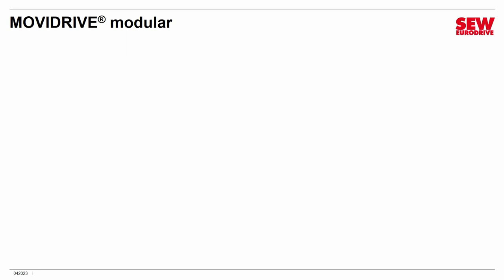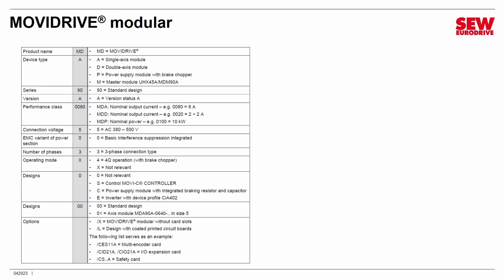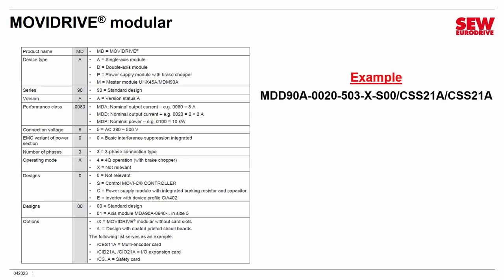Now let's do a MoviDrive Modular example. MoviDrive Modular has multiple pieces, so we need to understand its nomenclature. A sticker reads: MDD 90A-0020-503-X-S00/CSS21A/CSS21A. MD means MoviDrive and D means double-axis module — axis modules are only part of MoviDrive Modular setups. So this is a MoviDrive Modular double-axis module that supports two motors.